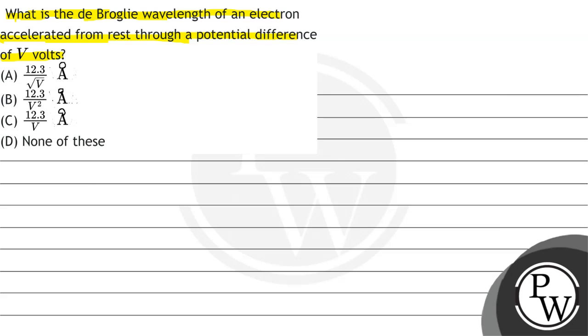We ask de Broglie wavelength of an electron which accelerated from rest. Initial velocity will be 0. Then through a potential difference of V volts. This is the potential difference PD is V volts.